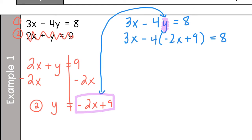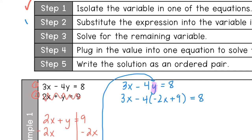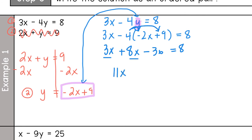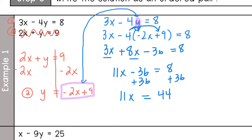We've done step two. Now step three — solve for x. So: 3x, then distribute negative 4: negative 4 times negative 2 is positive 8x, and negative 4 times 9 is negative 36, equals 8. Combine like terms: 3 plus 8 is 11x minus 36 equals 8. Add 36 to both sides: 11x equals 44. Divide by 11: x equals 4.